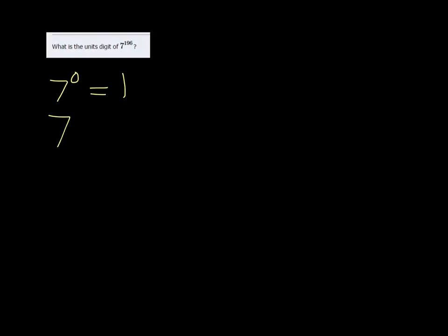7 to the 0 power is 1. 7 to the 1st power is 7. 7 squared is 49.